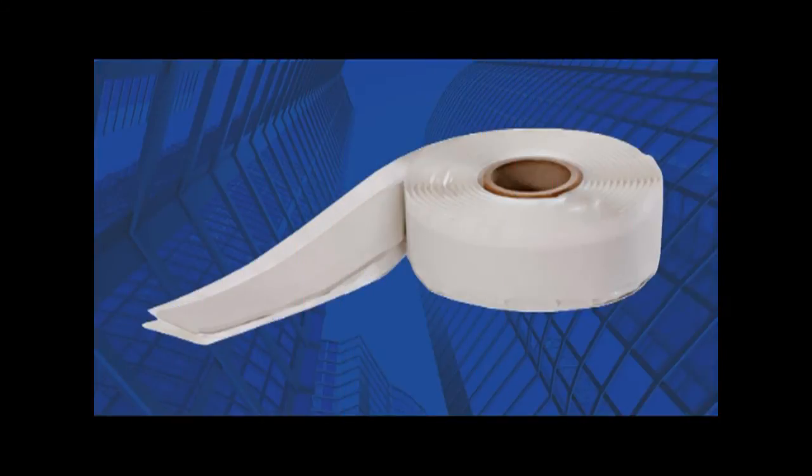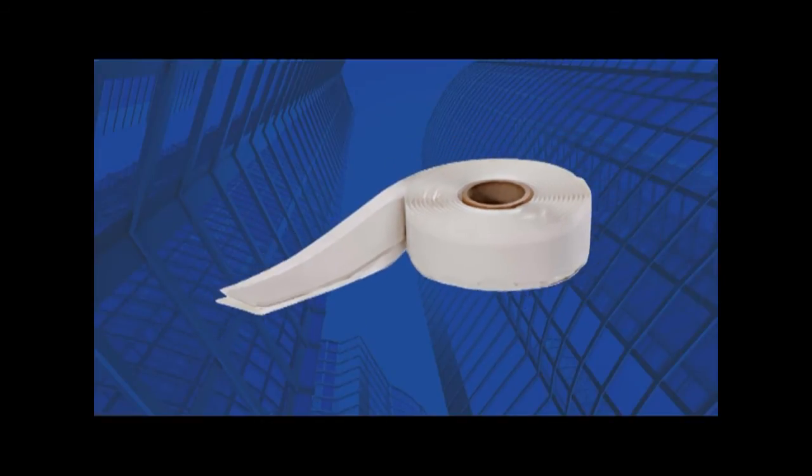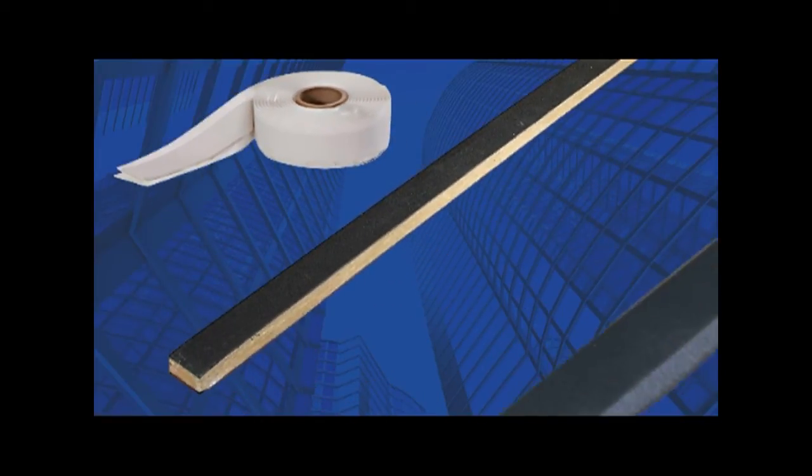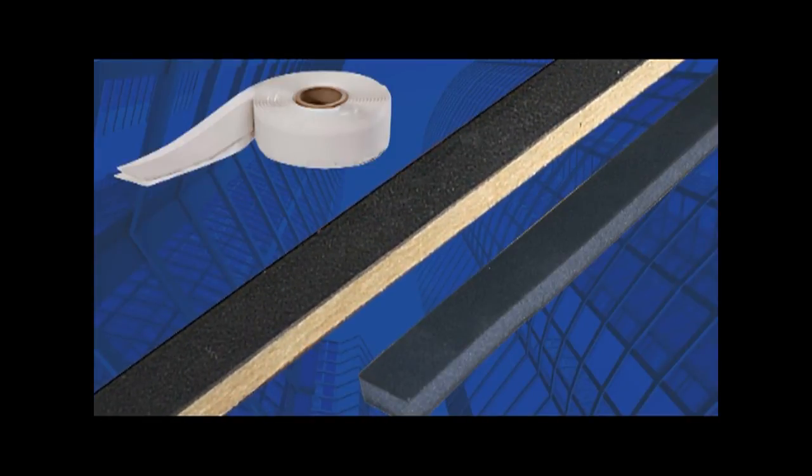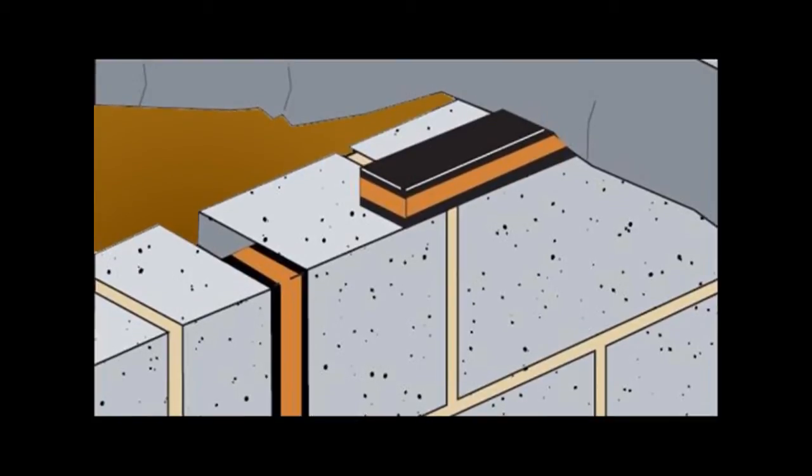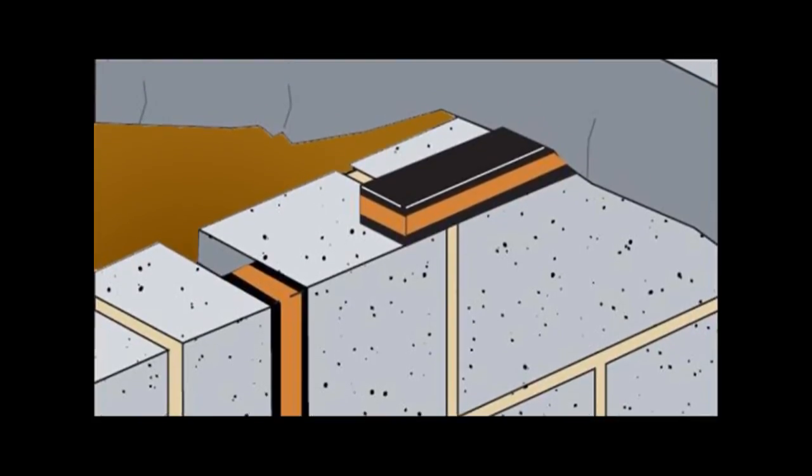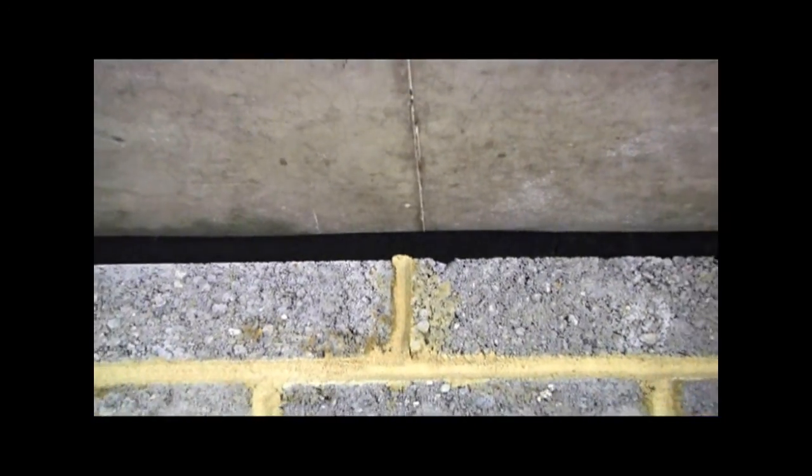These seals are made from elastomeric foam, sometimes with reinforcing sheets on either side. The foam and reinforcing sheets may be intumescent. These products are generally supplied in a strip form. They are normally used to seal gaps at movement joints between two building elements, such as between floors and walls.